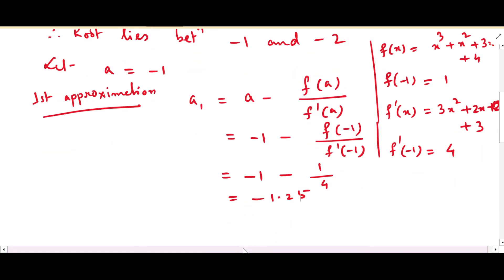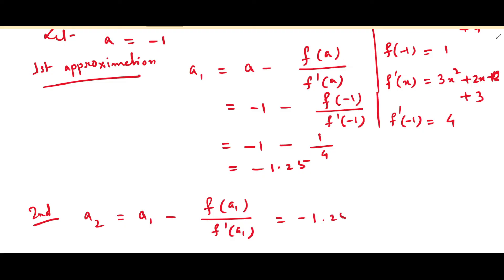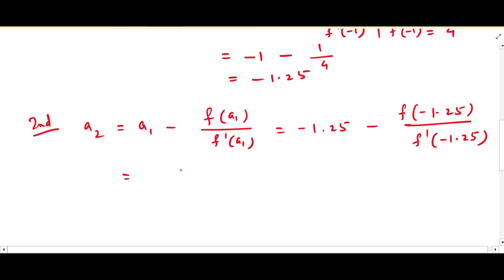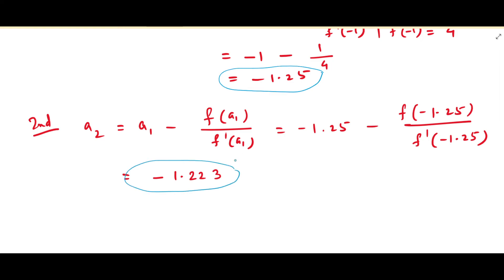So our first approximation is a1 = −1.25. For the second approximation, a2 = a1 − f(a1)/f'(a1) = −1.25 − f(−1.25)/f'(−1.25). To find f(−1.25) substitute into f(x), and to find f'(−1.25) substitute into f'(x). After calculation, a2 = −1.223. Since a1 and a2 are not the same, we continue.